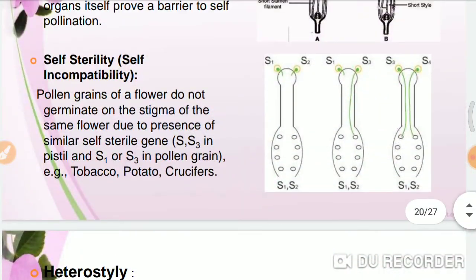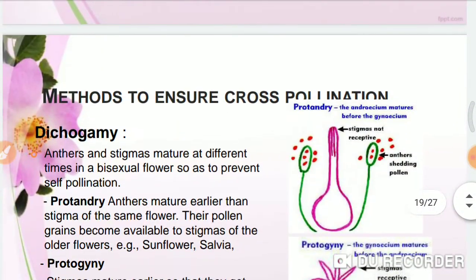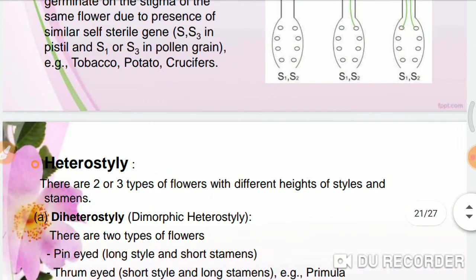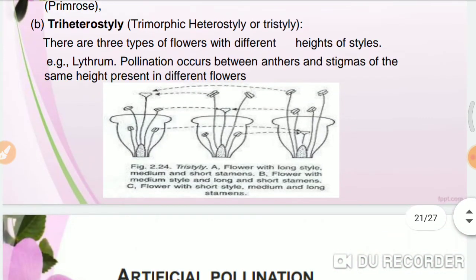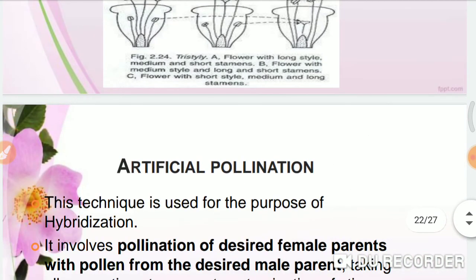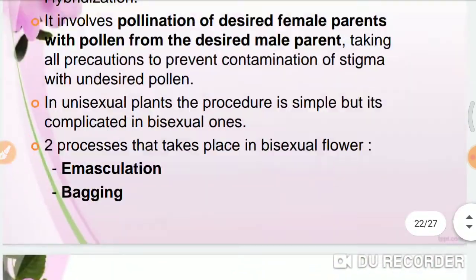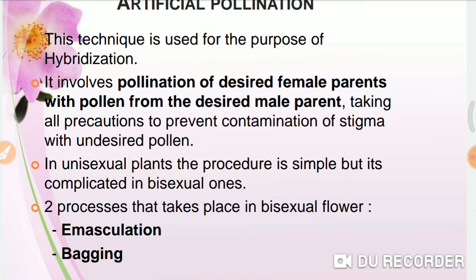Apart from dichogamy, herkogamy, self-incompatibility, and heterostyly, one more example is unisexuality. When a flower is unisexual — meaning it contains only one gametophyte, either only the androecium or only the gynoecium — there is no chance of self-pollination.